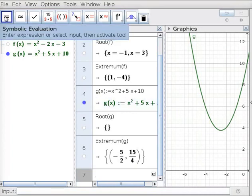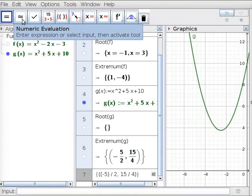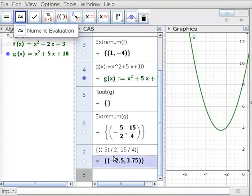While evaluate tool is highlighted in CAS view toolbar, the extremum appears as fractions: minus 5 divided by 2 comma 15 divided by 4. In line 6, click on the extremum and click on Numeric tool. The extremum now appears in decimal form: minus 2.5 comma 3.75.